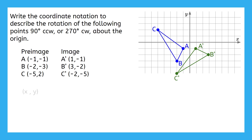We can start by writing the general notation that we always use. Then we have to look for a pattern like we did in our other coordinate notation lessons. There is a pattern when going from the preimage to the image, but it's tougher to find than it was in the other lessons. Take some time here to pause the video and try to find the pattern yourself. Remember, we're looking for how the x and y coordinates changed between the preimage and the image, like a number in a different spot or a different sign paired with each number.